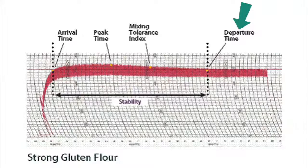Departure time is the time to the nearest half minute from the first addition of water up to the point where the top of the curve leaves the 500 BU line. In general, a longer departure time indicates a stronger flour.